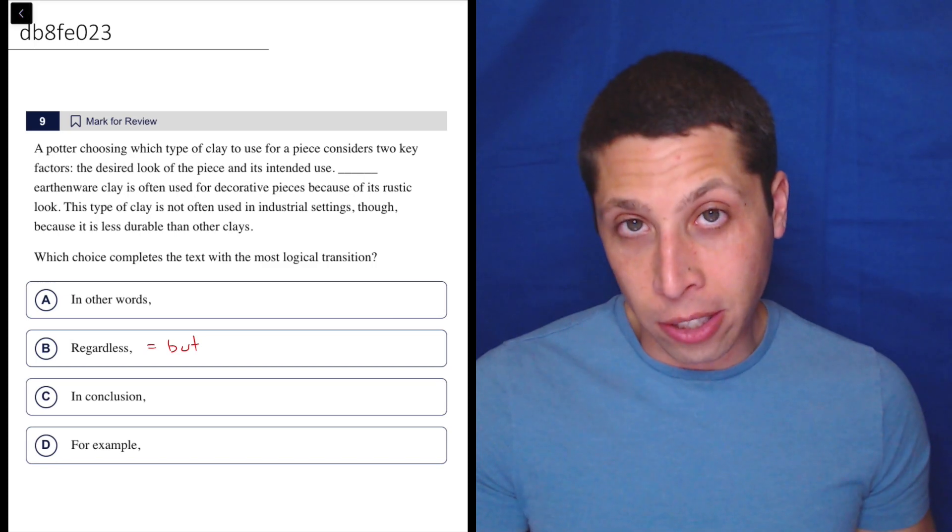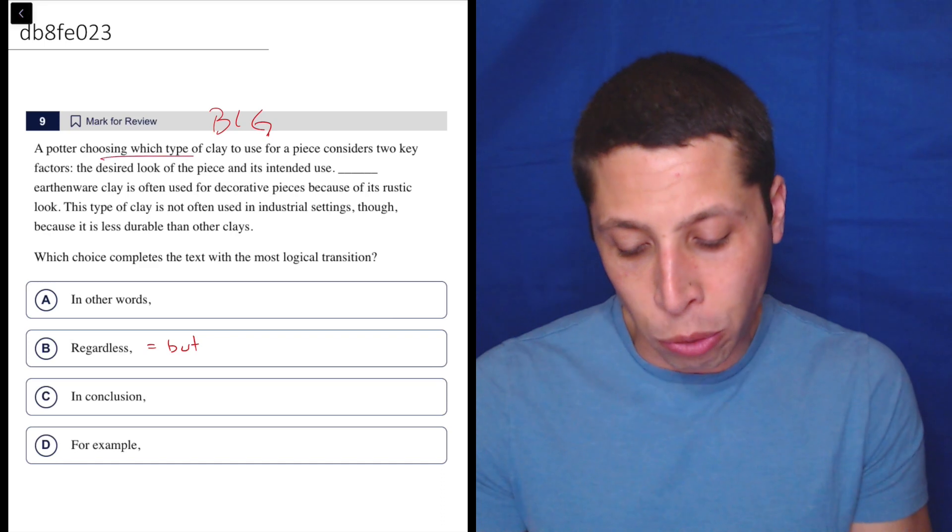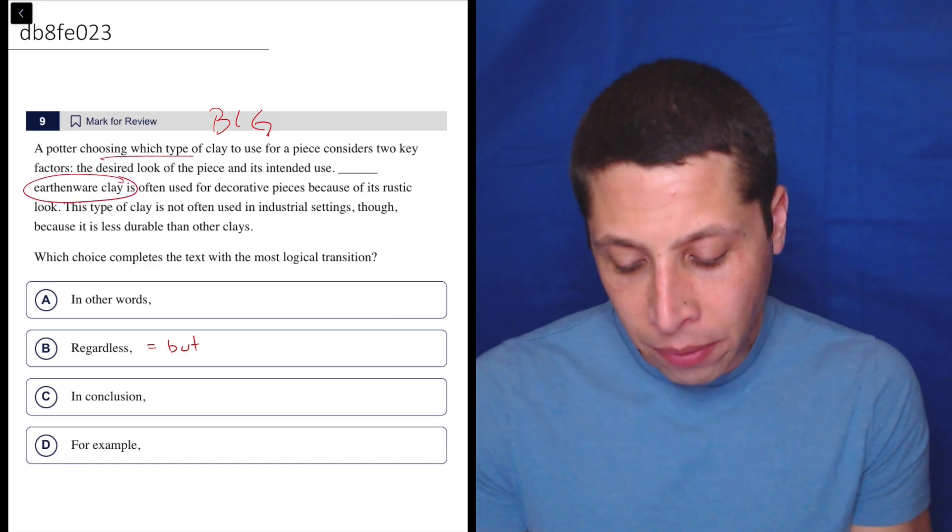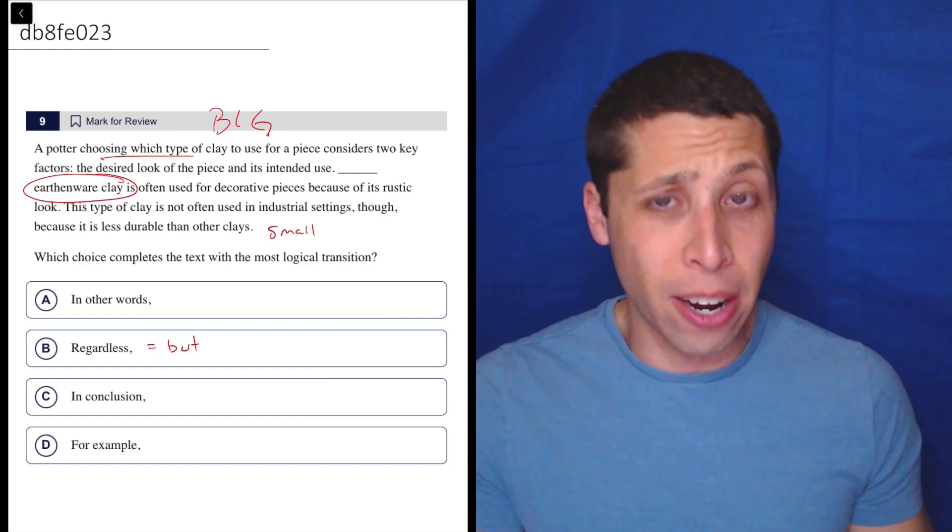Well, to me this is a good example of them talking about a big idea—they're choosing the type of clay—but then we get a very specific small idea, a specific type of clay and what it's good for and what it's not good for.